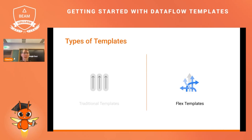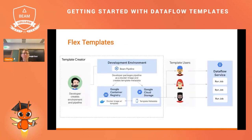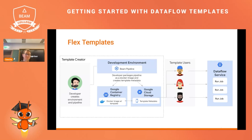The second type of template is the flex template. The development flow here is a little bit different. A person develops a pipeline, tests it, and is fine with the results. At the end, a template metadata file is created on Cloud Storage, and a Docker image of the pipeline is stored in a container registry. Users are then able to refer to the template file and submit the code to execute the actual Beam pipeline.